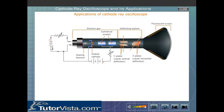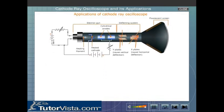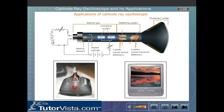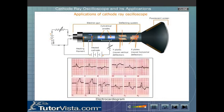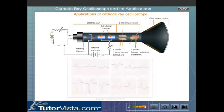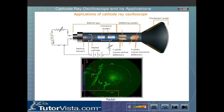Applications of cathode ray oscilloscope: Cathode ray oscilloscopes are used in transmission as well as receiving units of television systems, to convert electrical impulses corresponding to heartbeats into visual signals, and in radar systems to detect enemy aircraft.